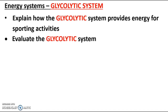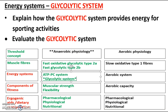Just to keep us oriented within our scheme or sequence of work — we're looking at anaerobic physiology. We've looked at anaerobic muscle fibres and the ATP-PC system, which gives us anaerobic high intensity energy for up to 10 seconds. When those 10 seconds finish, we switch to our glycolytic system, which is our second anaerobic energy system.